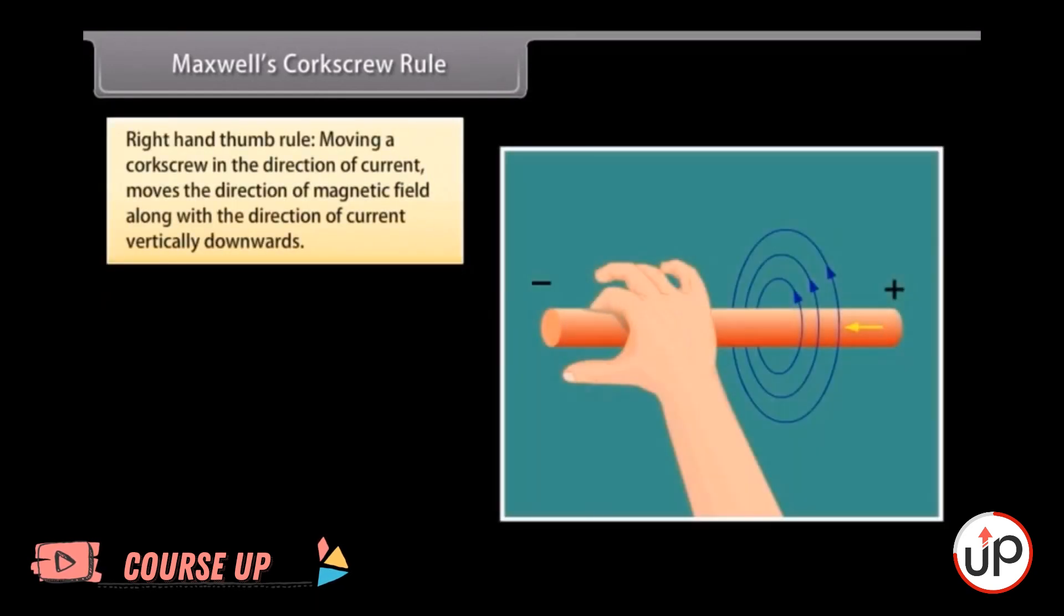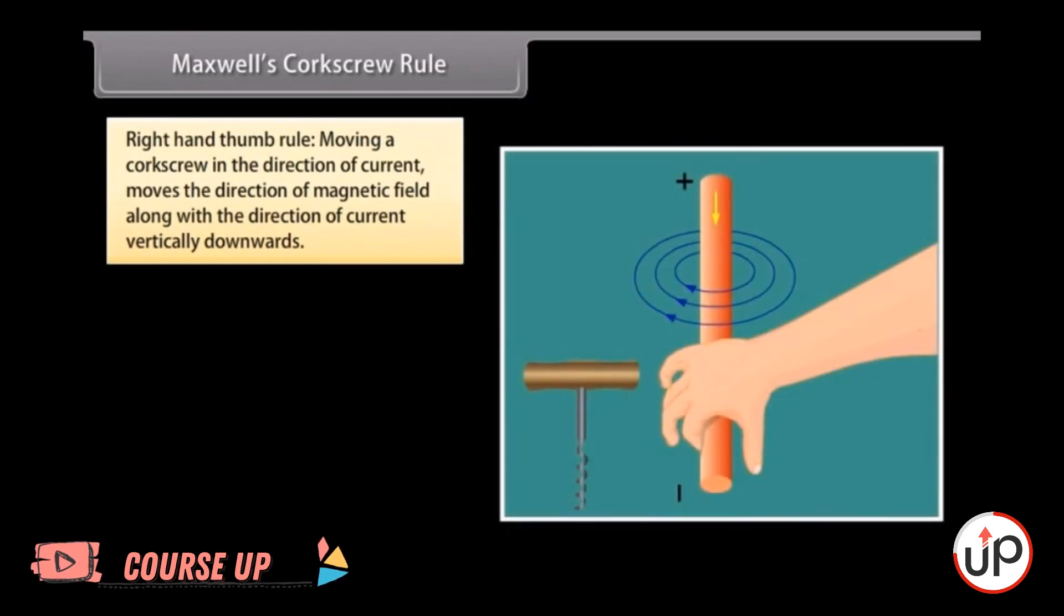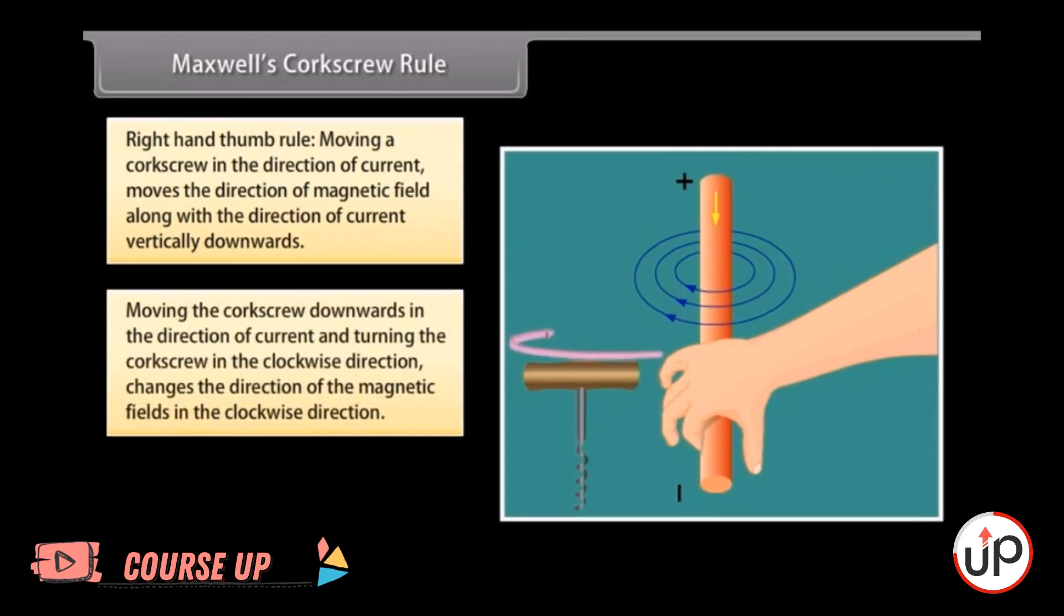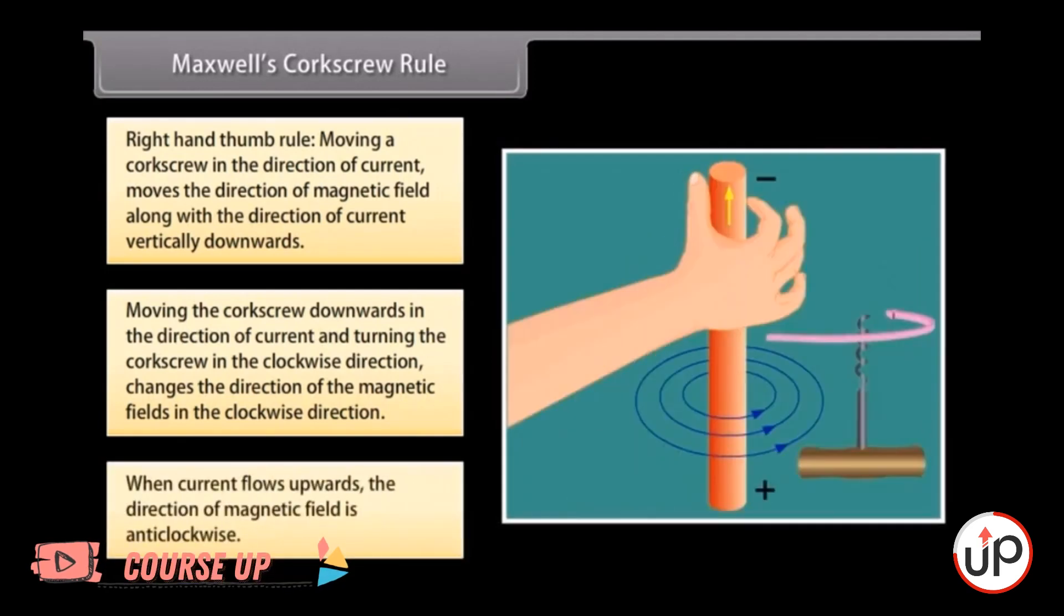Maxwell's Corkscrew Rule, also known as Right Hand Thumb Rule, defines that moving a corkscrew in the direction of current moves the direction of magnetic field along with the direction of current vertically downwards. If we move the corkscrew downwards in the direction of current and the handle of corkscrew is turned in the clockwise direction, then the direction of the magnetic fields is in the clockwise direction. So when current flows upwards, the direction of magnetic field changes and is anti-clockwise.